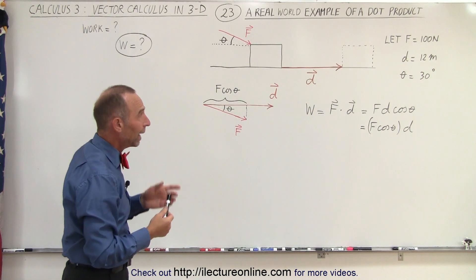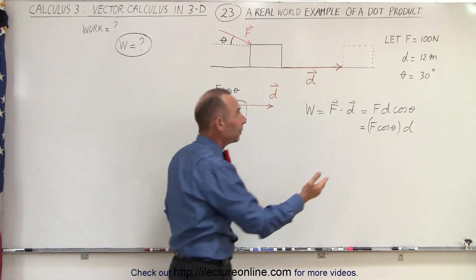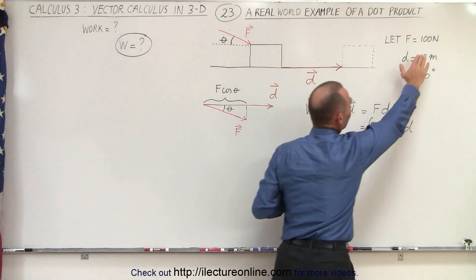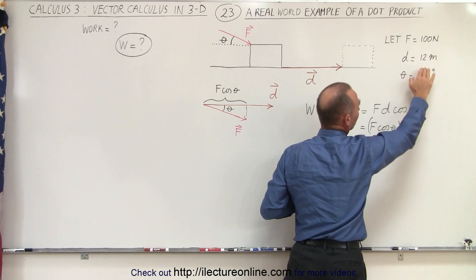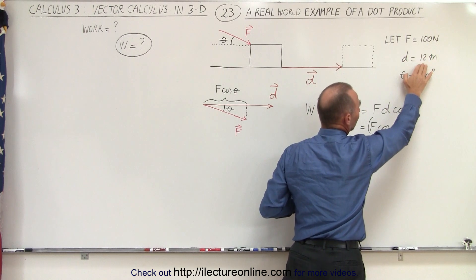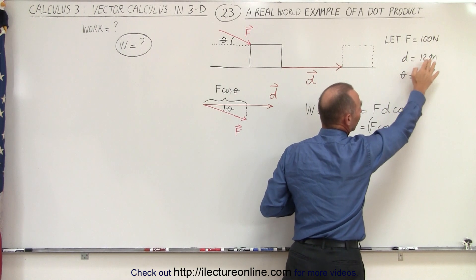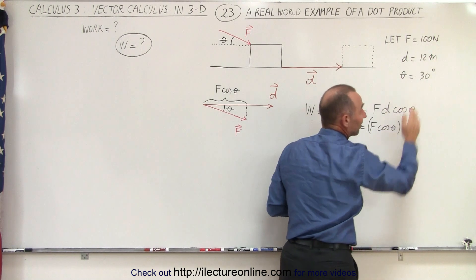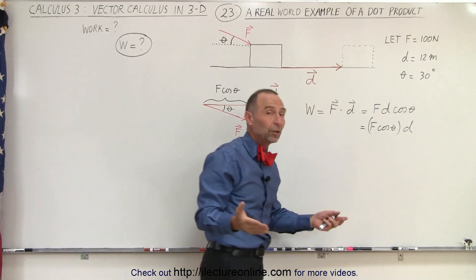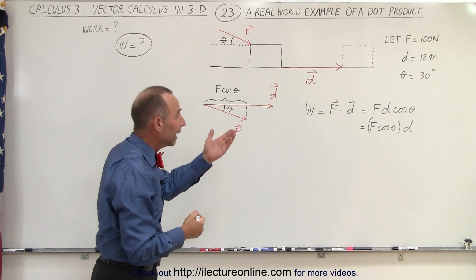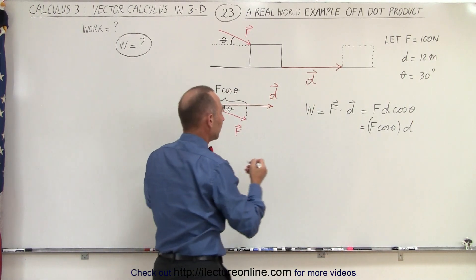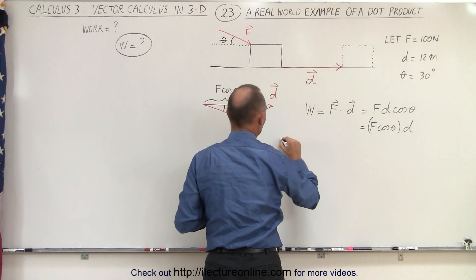Now let's go ahead and do an example. Let's say the magnitude of the force is 100 newtons, the displacement or distance traveled is 12 meters, and the angle between the two is 30 degrees. The work done can be calculated as follows.